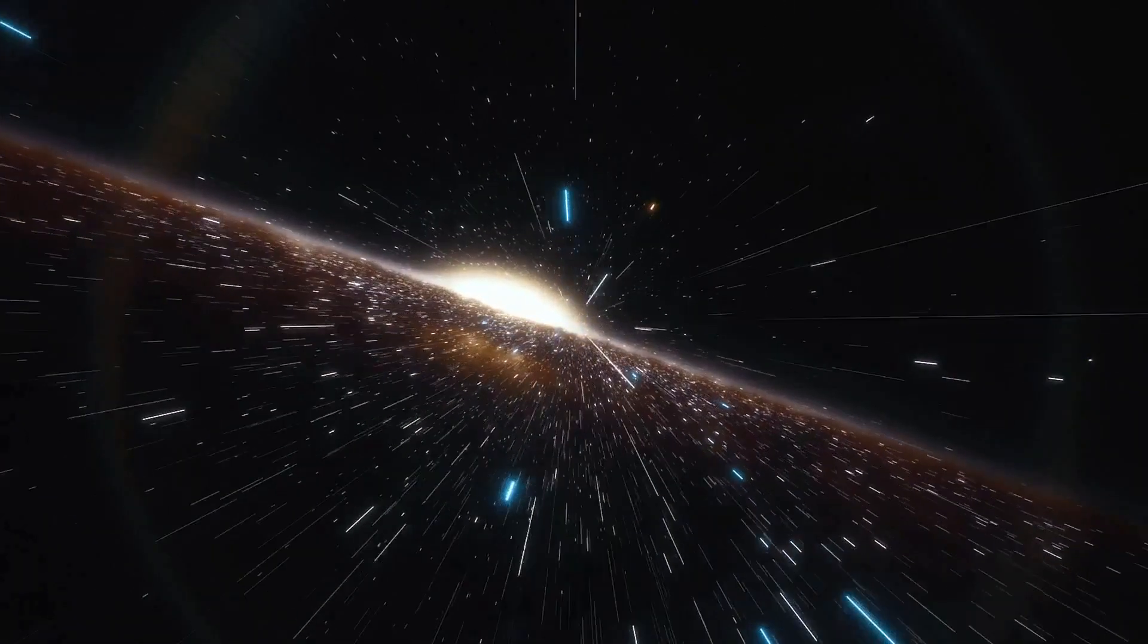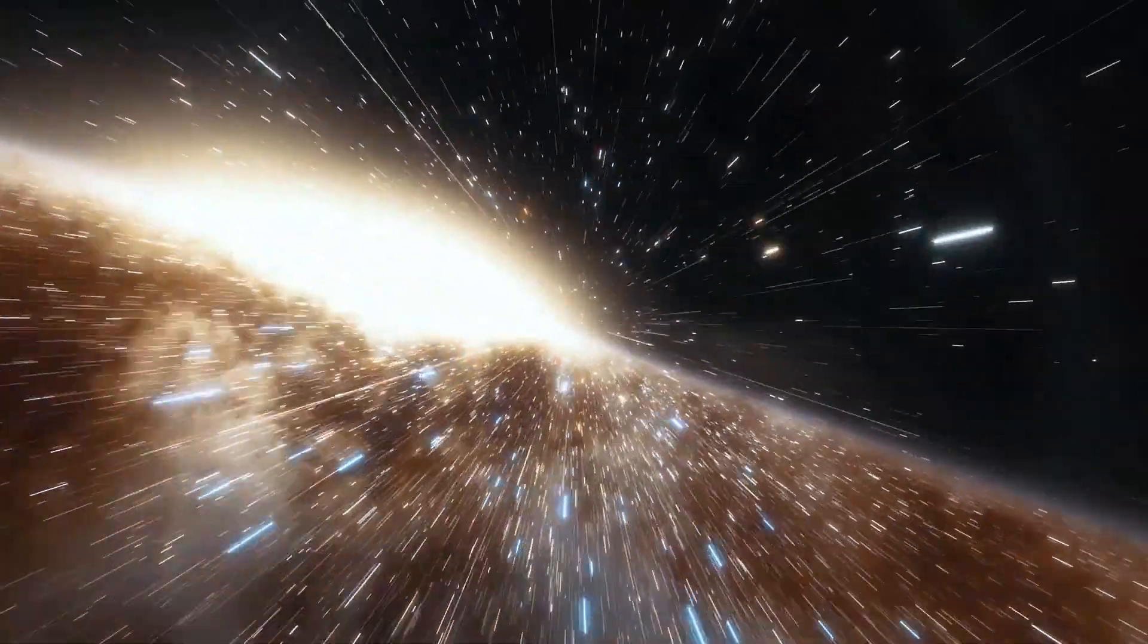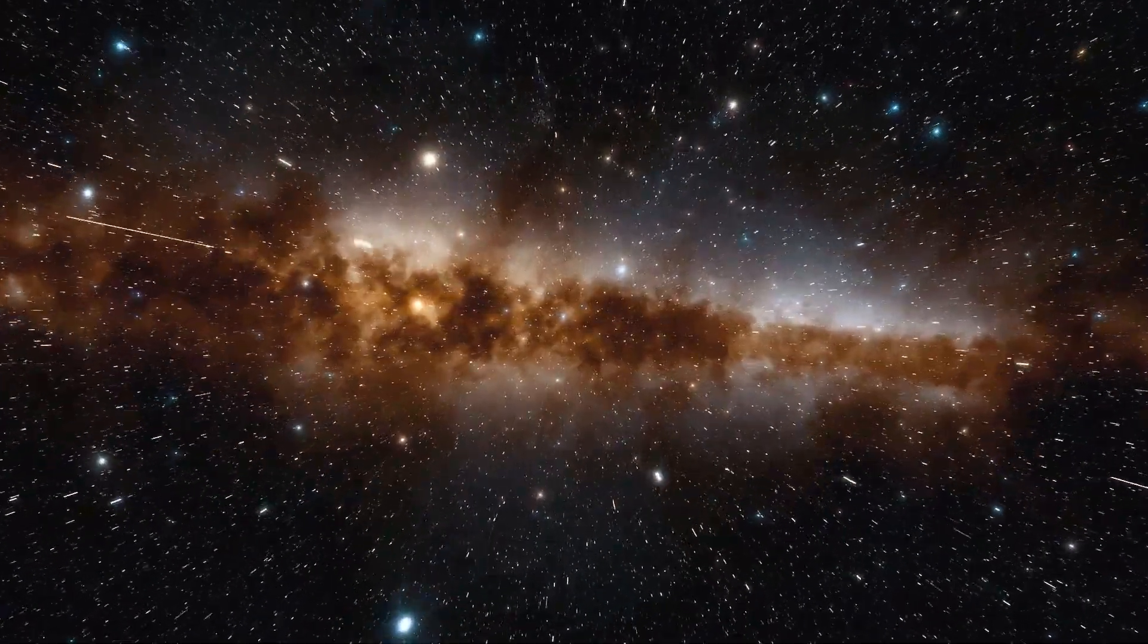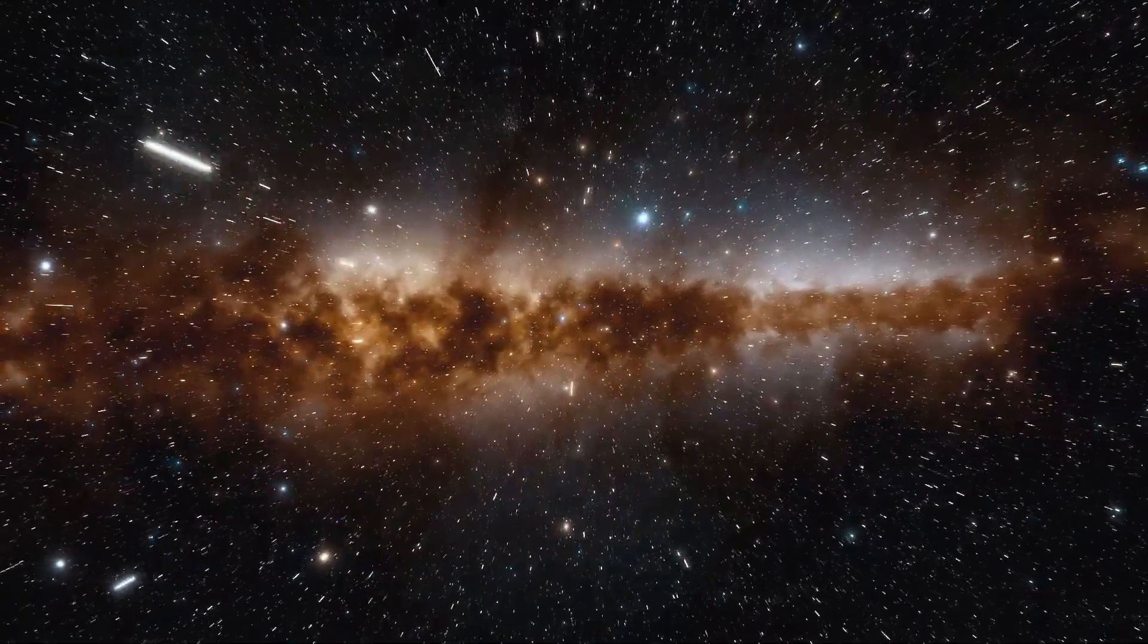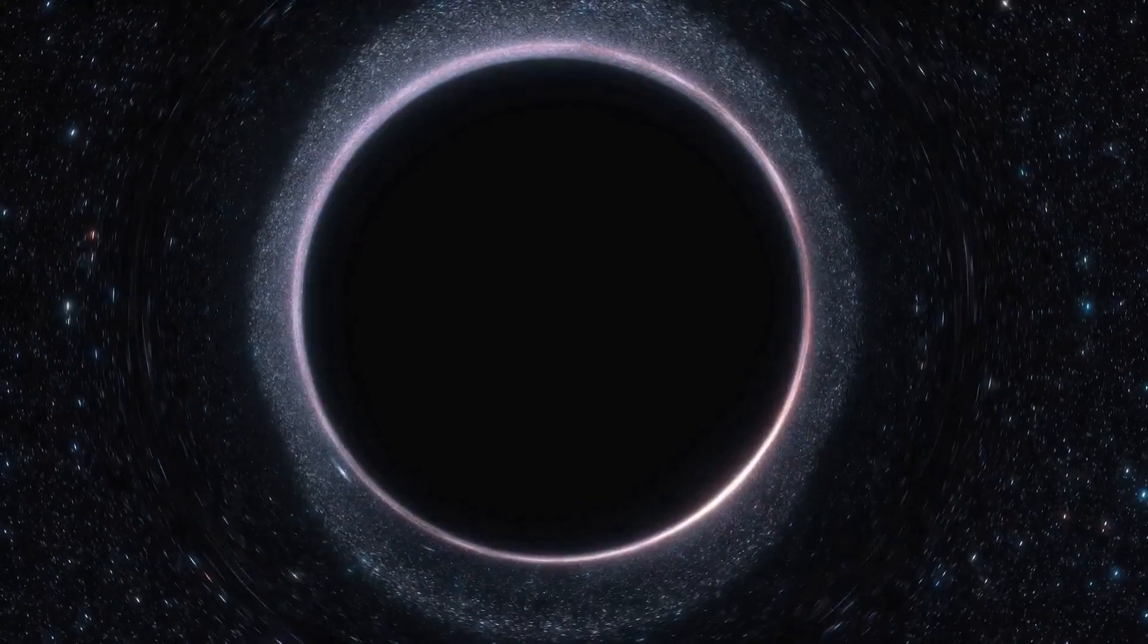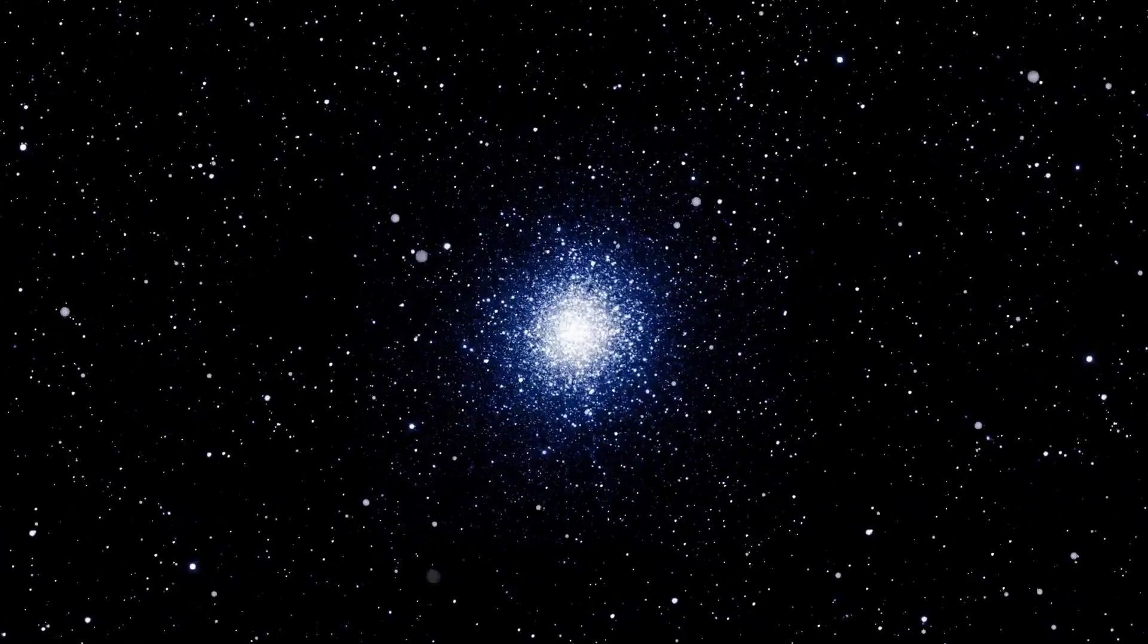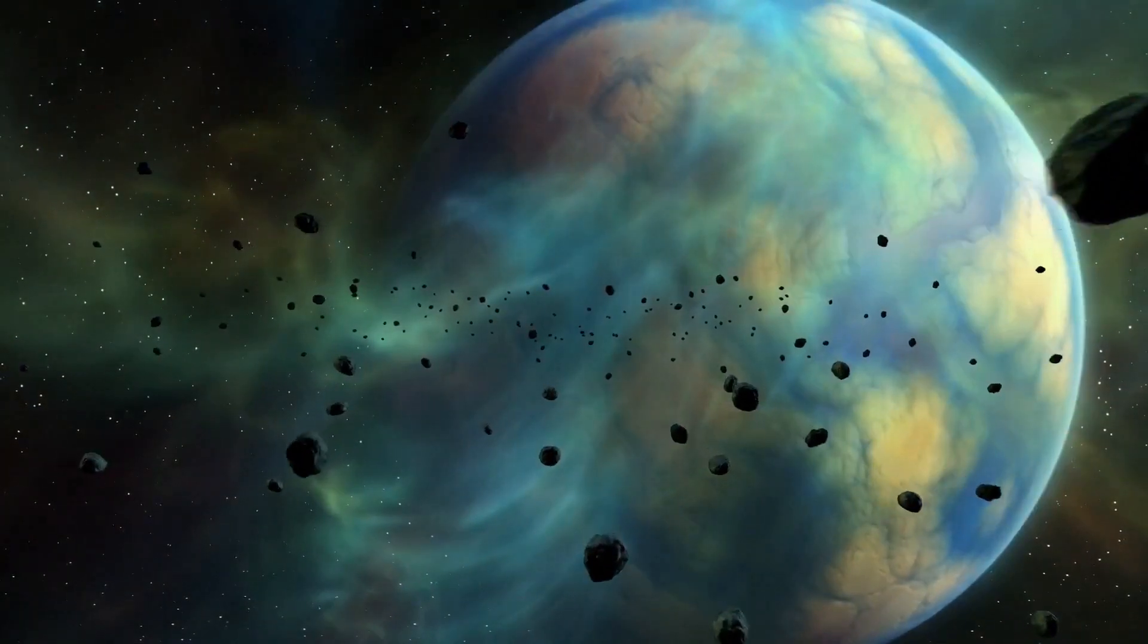The bigger the structure, the sooner it will rip apart. First on the list are the galaxies. They'll get ripped up and fall apart. This expansion will cause stars and black holes to fall apart next, and then it will get smaller and smaller, and planets will start to rip apart as well.